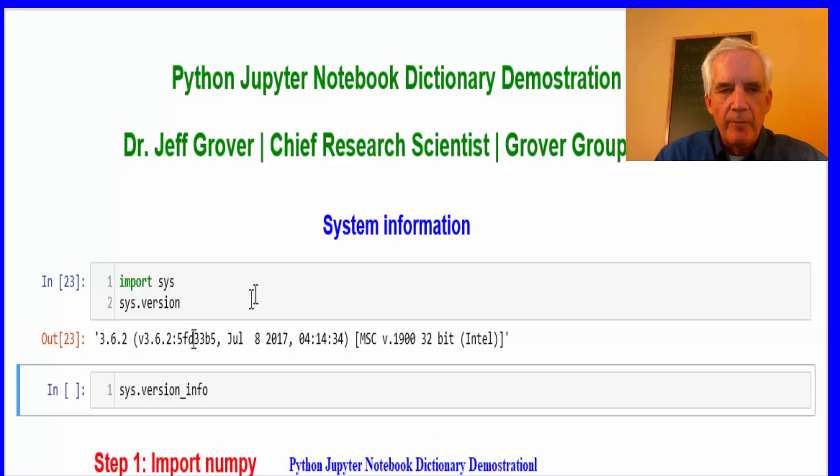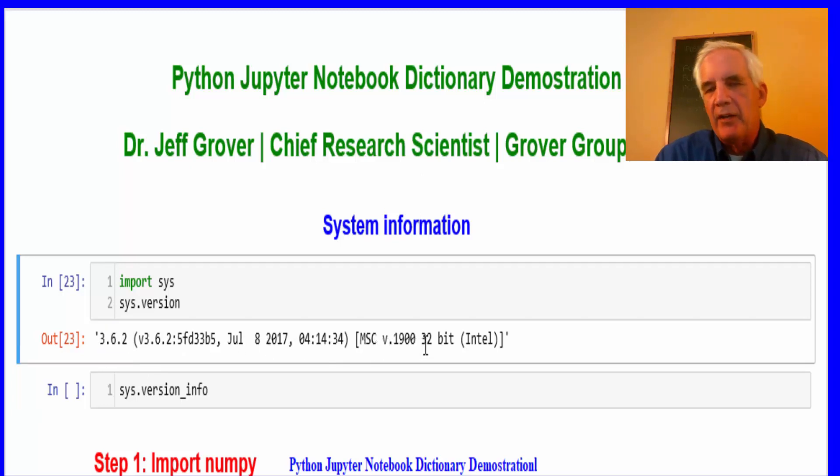So that's the system information. I'm using 3.6.2 and the latest Jupyter Notebook comes in 32-bit. I'm not quite sure why the 64-bit went away.